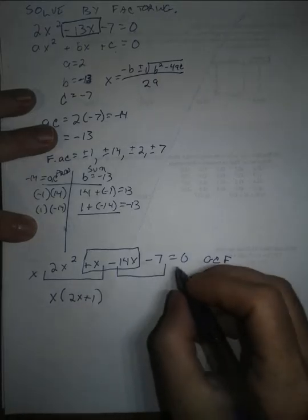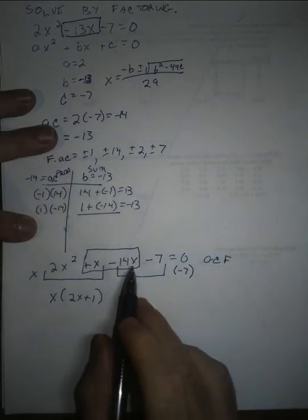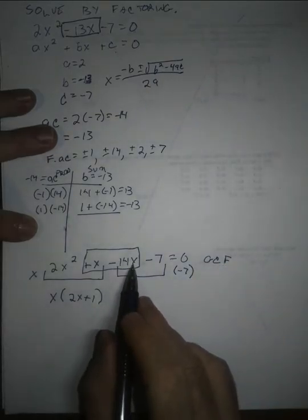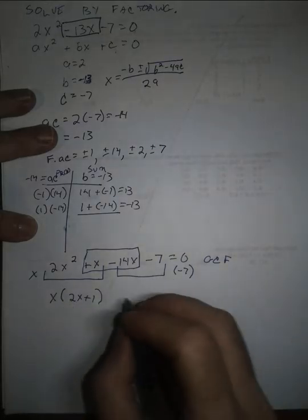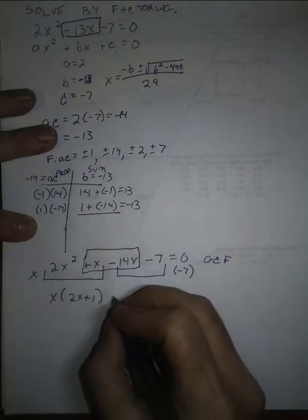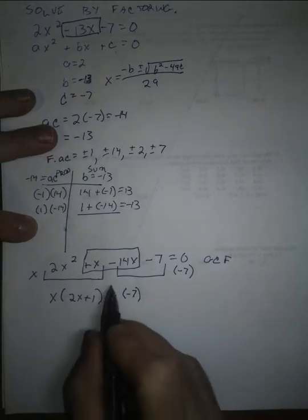And in my second one, my greatest common factor is negative 7. Usually, if there's a negative sign in front of the x, we factor out the negative and leave positive coefficients on the x. So this is going to be plus negative 7, or you could write minus 7.